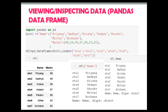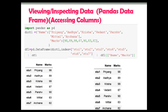We can access columns using bracket notation and dot notation. With bracket notation you display the name column, and the same can be done with dot notation. However, you can display multiple columns by passing a list inside the bracket notation, which is not possible with dot notation. With bracket notation we can print multiple columns simultaneously.